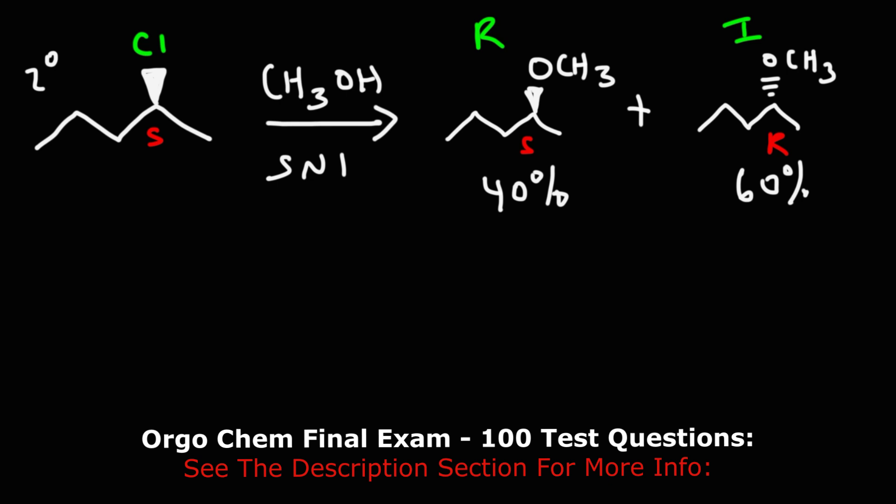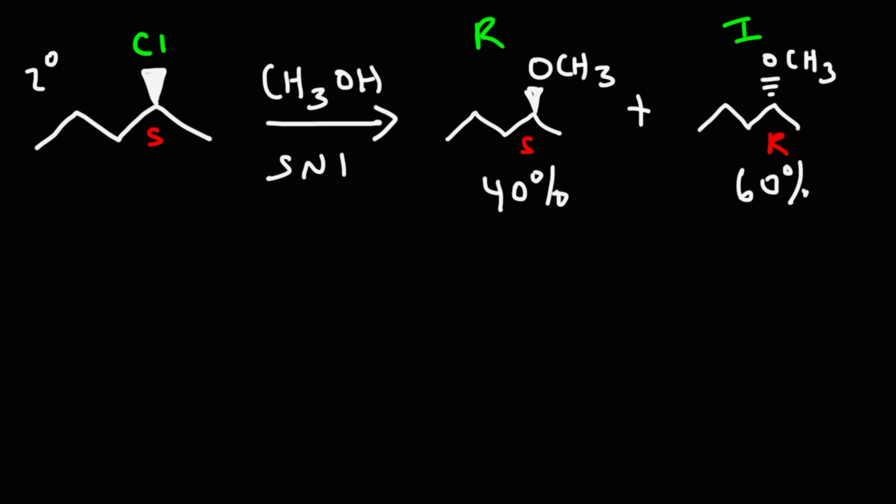Why do we get more of the inverted product than the retention product? The answer has to do with something called the intimate ion pair. Now let's talk about the mechanism for this reaction. In the first step, the leaving group is going to leave, and we're going to get a carbocation, a carbon with a positive charge.